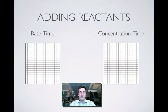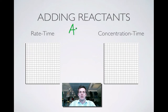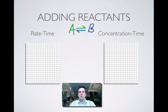Let's start off by looking at what happens when we add reactants to a system. We're going to look at a system where A turns into B in the forward reaction, and where B in the backward reaction turns back into A. According to Le Chatelier's principle, if I add reactants, the system's going to try and remove them. How does this system try and remove them? It turns them into products.